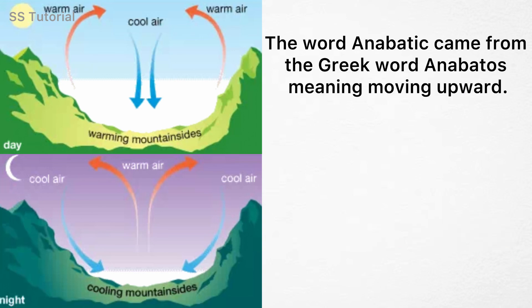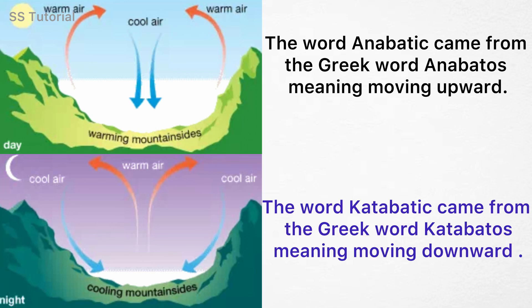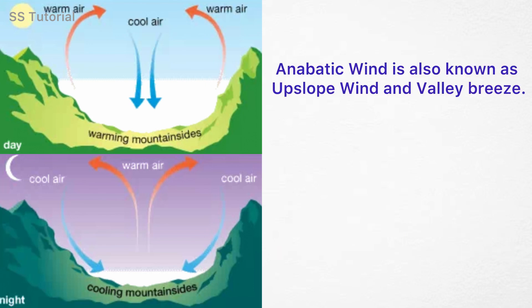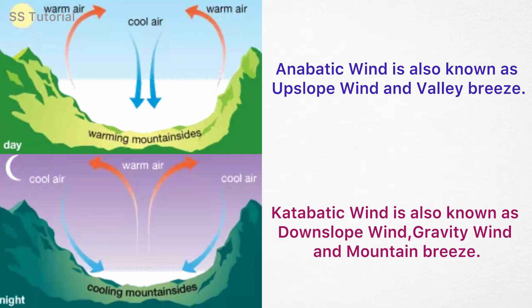The word anabatic comes from the Greek word anabatos, meaning moving upward. And the word katabatic comes from the Greek word katabatos, meaning descending or moving downward. Anabatic wind is also known as upslope wind and valley breeze. Whereas katabatic wind is also known as gravity wind, downslope wind, and mountain breeze.